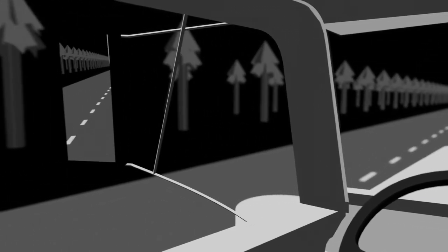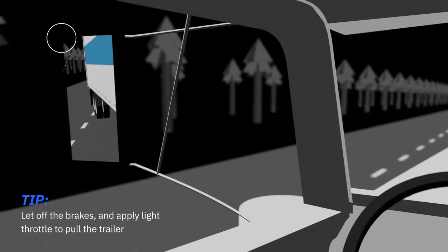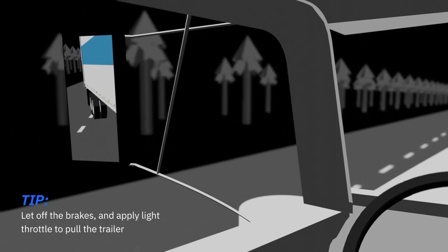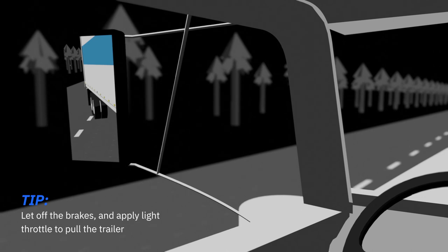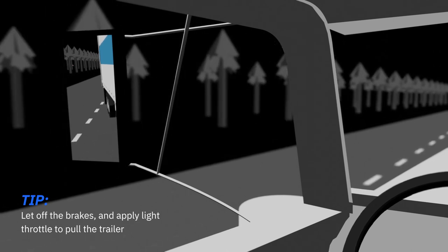If you see the trailer starting to swing out of your lane, let off the brakes and if possible apply light throttle. This will allow the tractor to pull the trailer back into your lane and stop jackknifing.